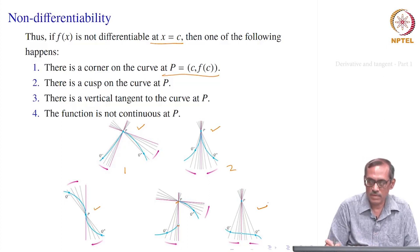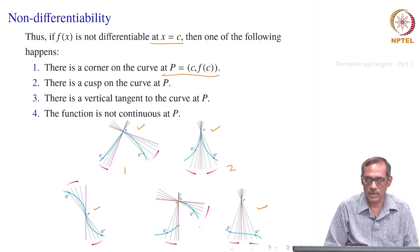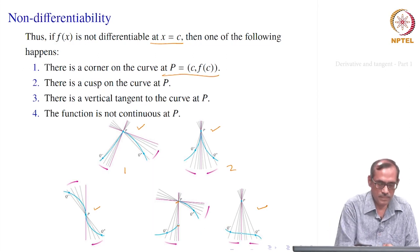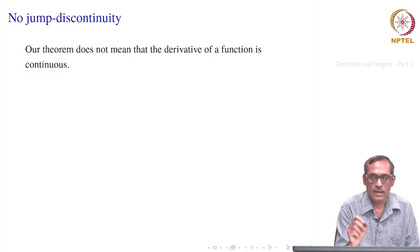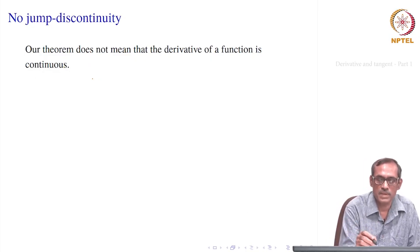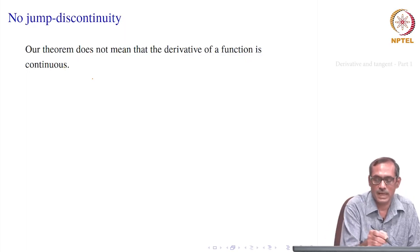These are the five possibilities that can happen when a function is not differentiable at a point, looking at the geometry: corner, cusp, vertical tangent, jump discontinuity, or removable discontinuity.